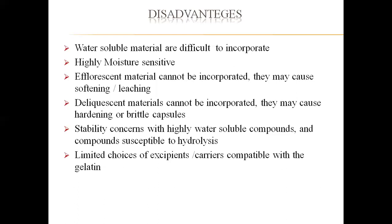Efflorescent materials are substances that lose moisture when kept in an open atmosphere, and cannot be incorporated into soft gelatin capsules. Deliquescent substances also cannot be incorporated — these are substances which absorb moisture instantly when kept in open atmosphere and turn into solution. They cannot be incorporated because they will absorb moisture from the capsule shell, making the shell brittle and hard.